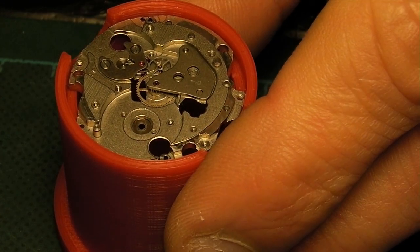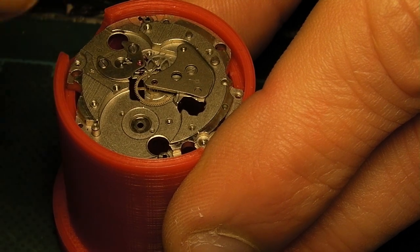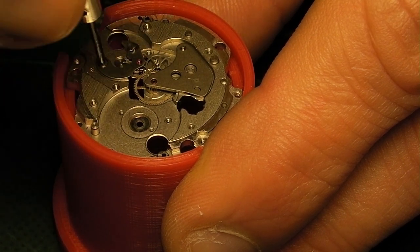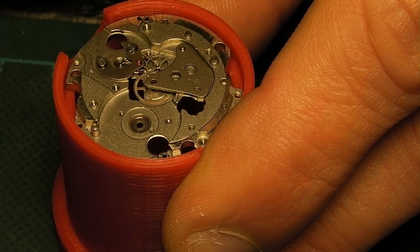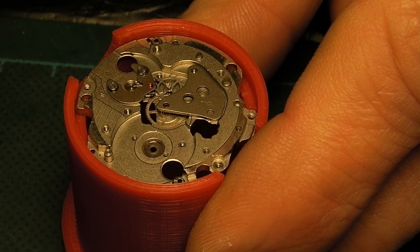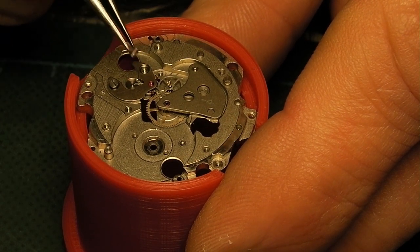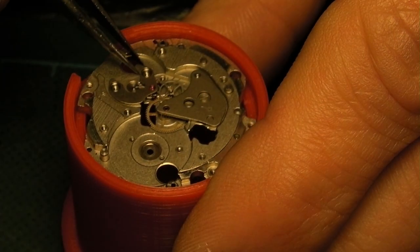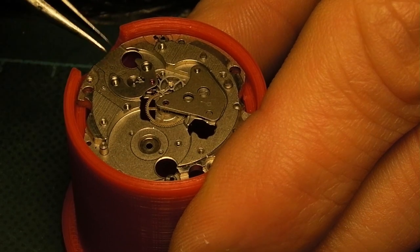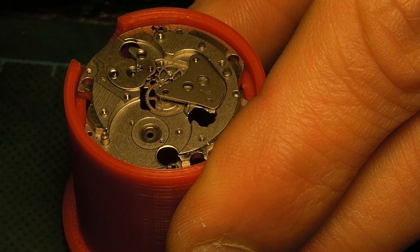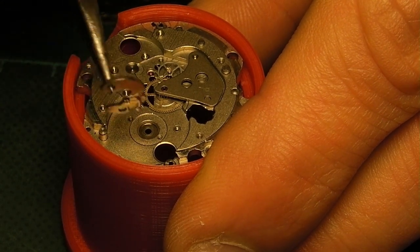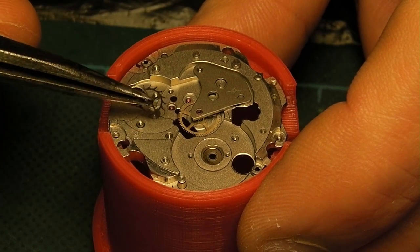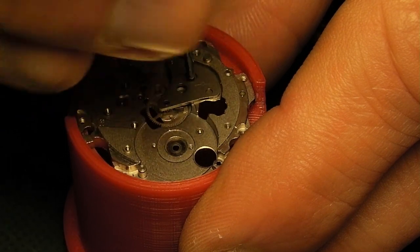Here I remove the pallet fork bridge—ideally I should have done this prior to removing the train and barrel bridge, but as long as you don't try and force anything out it shouldn't be a problem. When I lift away the pallet fork bridge, the pallet fork remains stuck in the bridge. This is typically a bad sign because it usually means that the pallet fork pivots have been oiled, which is generally not recommended. Then we're removing the escape wheel.